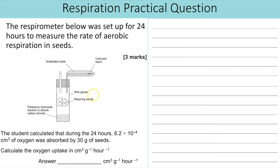It's also really common that you get maths questions linked to this, because you could be asked to work out the rate of respiration based on how quickly that coloured liquid is moving. And that's similar to what we've got here. The student calculated that during the 24 hours, 6.2 times 10 to the minus 4 centimetres cubed of oxygen was absorbed by 30 grams of seeds. So you then need to calculate the oxygen uptake in centimetres cubed per gram per hour. So they've already given us the volume, which is centimetres cubed. To do it per gram per hour, we'd need to then divide the volume by the mass and by time. We don't actually need to convert any units because it's all the same units throughout. So we just need to input those values. So it'd be 6.2 times 10 to the minus 4 as our volume, divided by the mass, which is 30, and divided by the time, which is 24. And that comes to 8.61 times 10 to the minus 7.